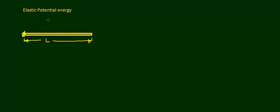As part of our discussion on elasticity, we now talk about elastic potential energy of a wire. We have a wire of length L, rigidly held at one end. We want to know the elastic potential energy stored in this wire if it elongates through a length small l. The elongation shown in red is this small l.